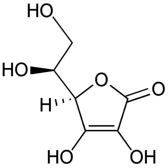In metal displacement reactions, a metal atom in a compound is replaced by an atom of another metal. For example, copper is deposited when zinc metal is placed in a copper sulfate solution: Zn(s) + CuSO4 → ZnSO4 + Cu(s). In the above reaction, zinc metal displaces the copper ion from copper sulfate solution and thus liberates free copper metal.